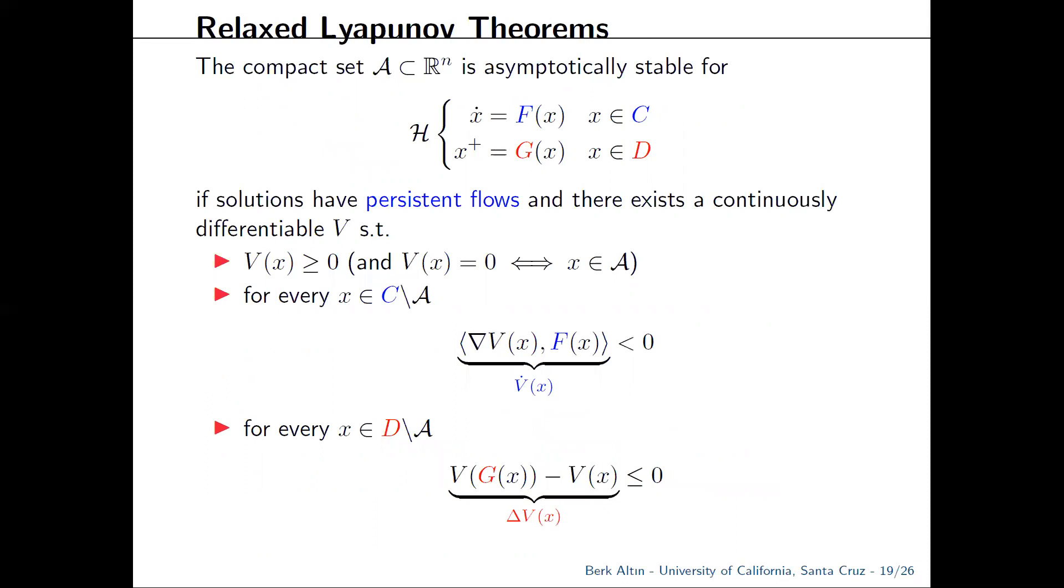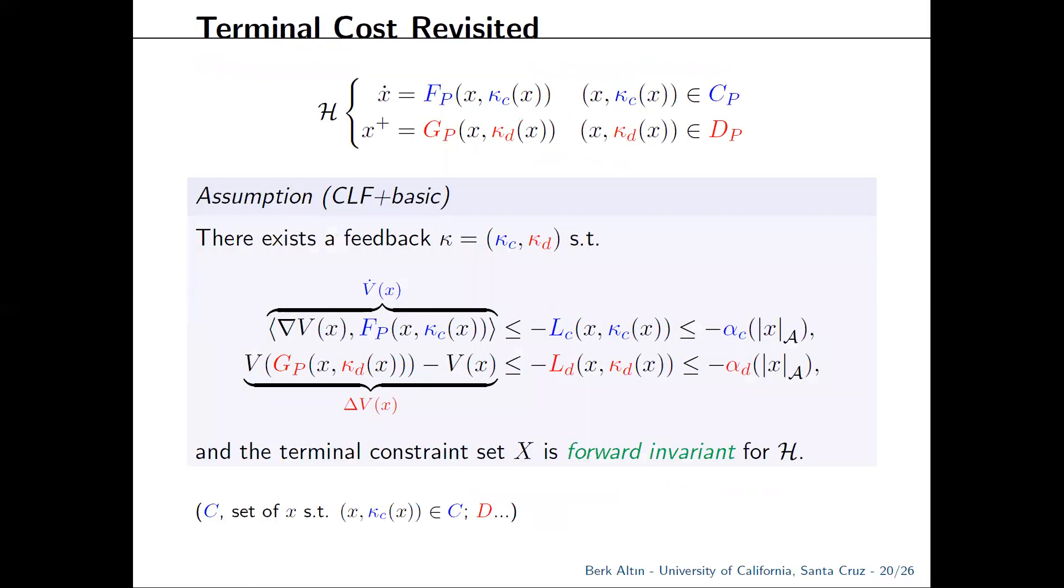If you have a closed loop system that has persistent flows, you can certify asymptotic stability as long as your Lyapunov function is decreasing during flows and non-increasing during jumps. And for persistent jumps, it is the opposite situation. We want to take this idea and apply it to hybrid MPC. So before we insisted on both V dot and delta V to be negative definite. Now we will allow one to be potentially semi-definite provided we have persistence.